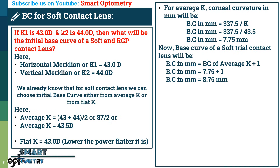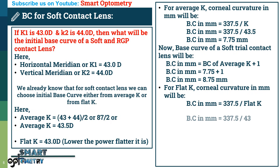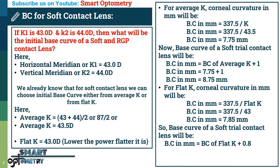If we want to identify the initial base curve of a soft trial contact lens from flat K, then corneal curvature in mm will be: base curve in mm equals 337.5 divided by K, or 337.5 divided by 43, equals 7.85 mm. This 7.85 mm is the corneal curvature based on flat K. So the base curve of a soft trial contact lens will be: base curve in mm equals base curve of flat K plus 0.8, or 7.85 plus 0.8, equals 8.65 mm.